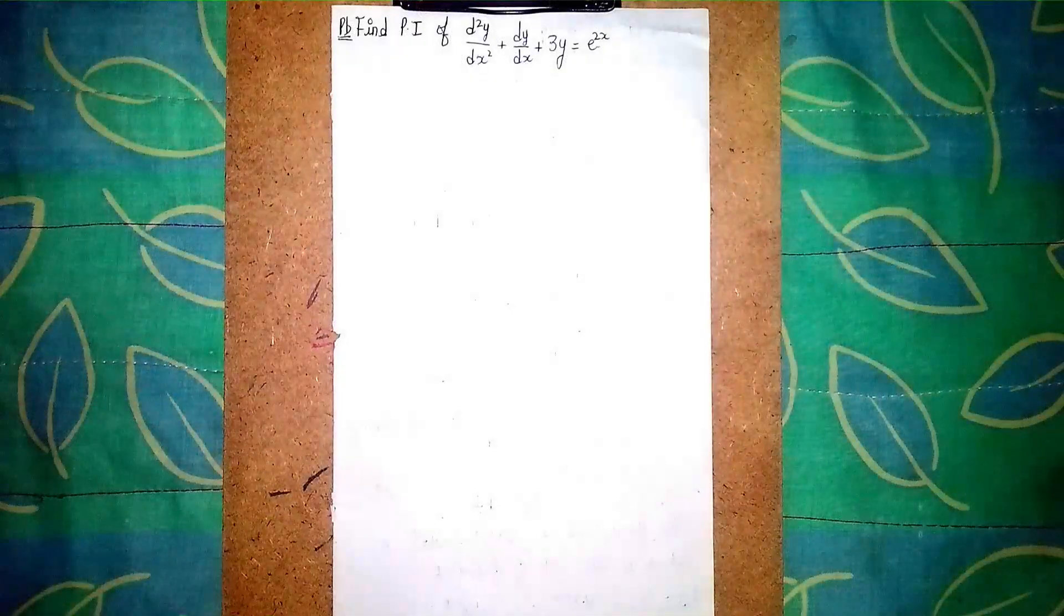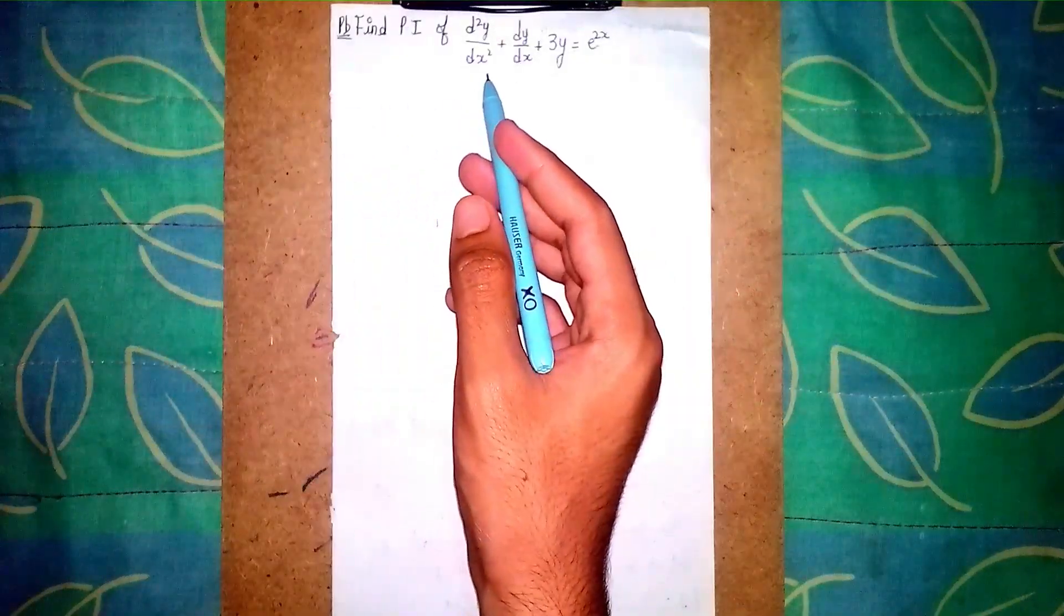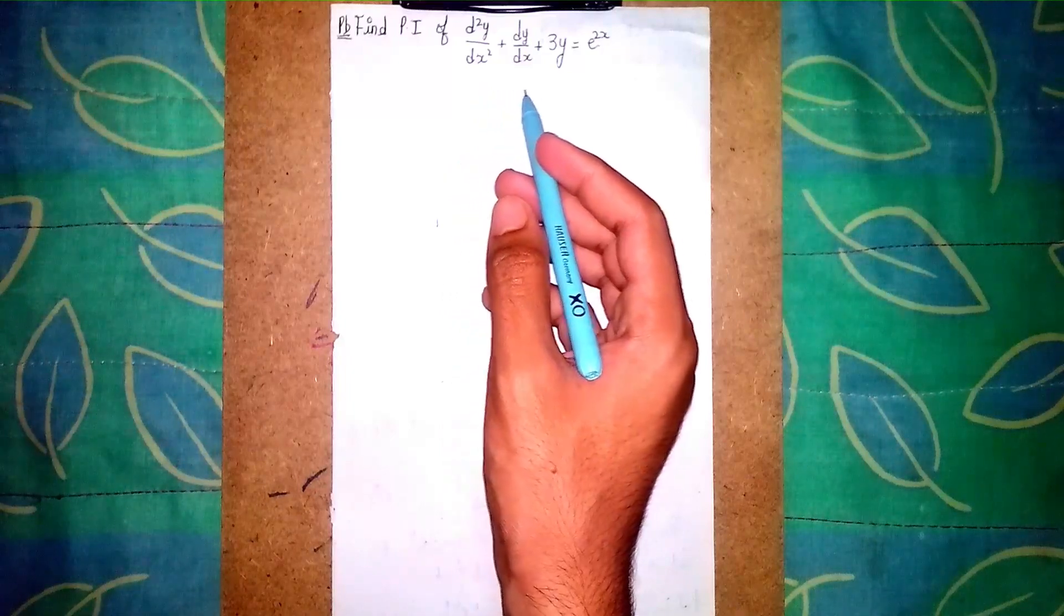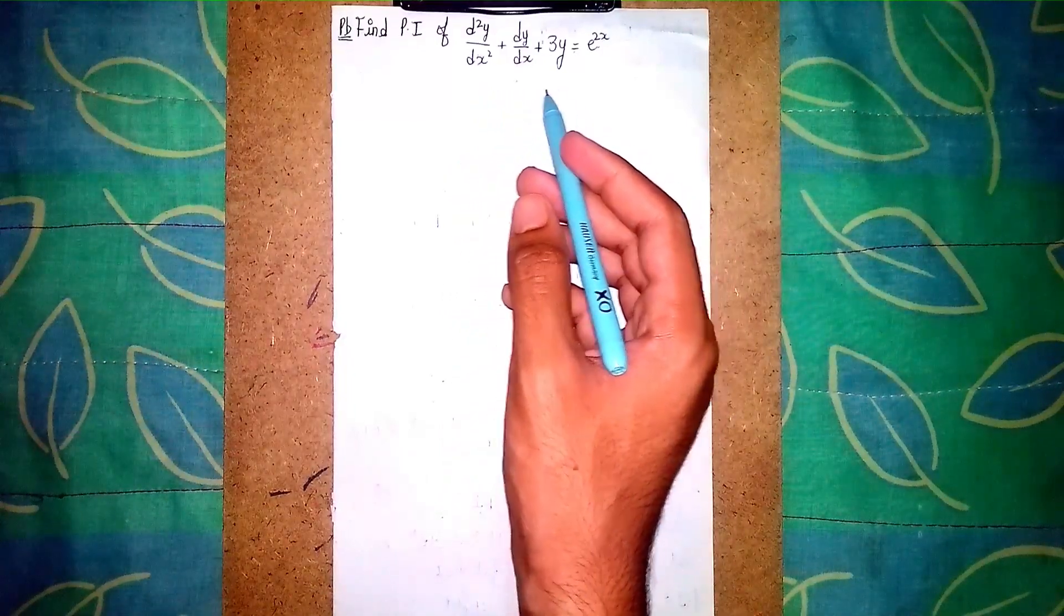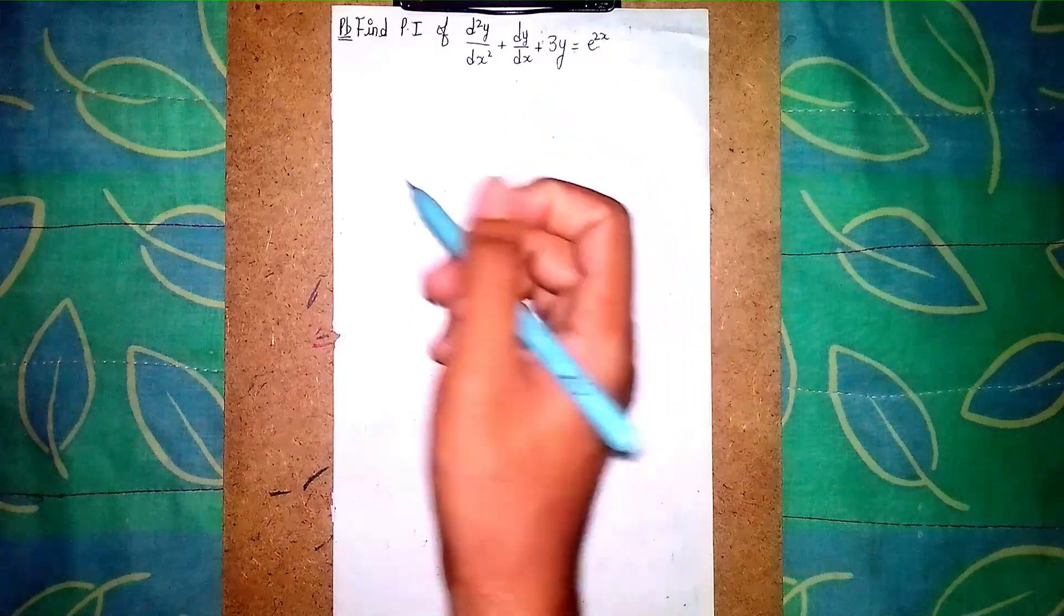Hello and welcome back to my channel. To this question: find PI of d²y/dx² + dy/dx + 3y = e^(2x). This is a non-homogeneous linear differential equation, so we're trying to find the particular integral.